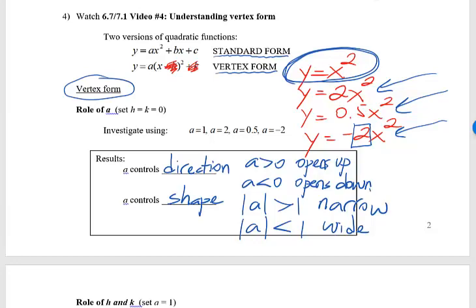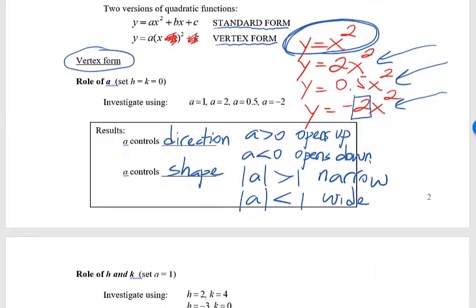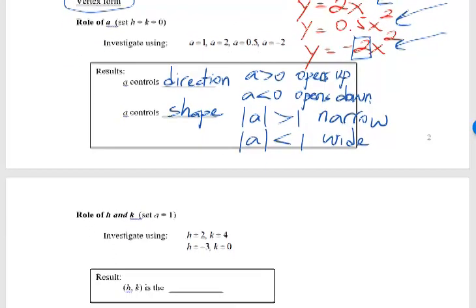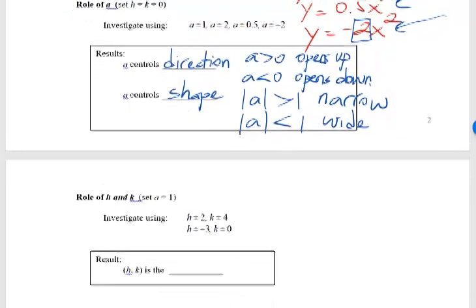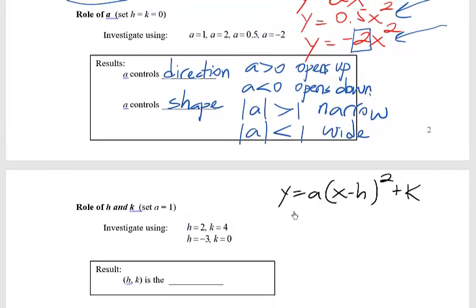Okay, that's the role of a. Let's go on and talk about then the role of the h and the k. I've jotted down the vertex form again. We've already figured out what a does, so let's just get it out of the way for this little investigation.